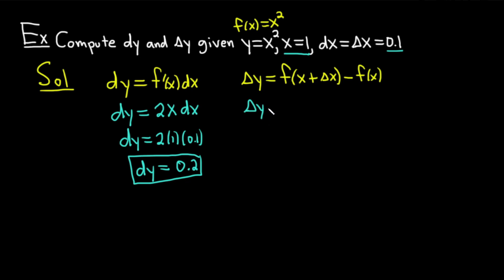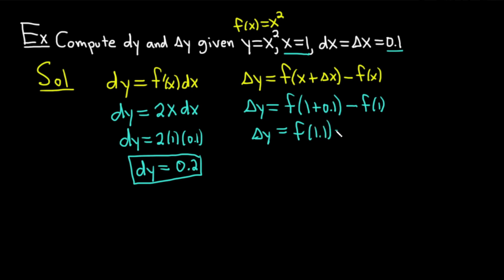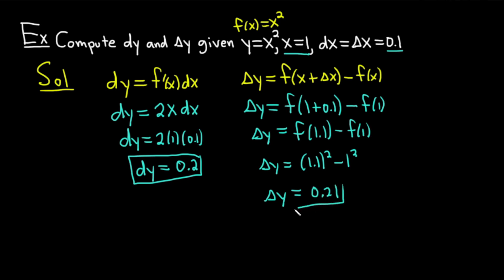Now let's compute delta y. Delta y equals f of x plus delta x minus f of x. With x equals 1 and delta x equals 0.1, we get f of 1.1 minus f of 1, which is 1.1 squared minus 1 squared. Putting this in the calculator gives 0.21. The actual change in y is 0.21, and the approximation dy is 0.2 — so it's a pretty good approximation in this case.